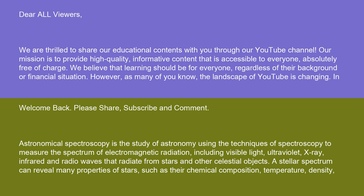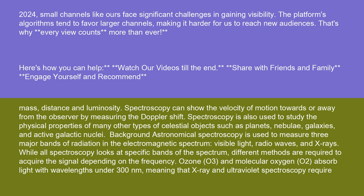A stellar spectrum can reveal many properties of stars, such as their chemical composition, temperature, density, mass, distance, and luminosity. Spectroscopy can show the velocity of motion towards or away from the observer by measuring the Doppler shift. Spectroscopy is also used to study the physical properties of many other types of celestial objects, such as planets, nebulae, galaxies, and active galactic nuclei.